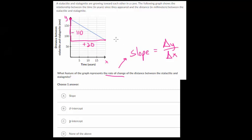So we can find roughly the slope of this line. But that's not what it's asking for. It's just asking which feature of the graph represents this rate of change. And that's the slope. The slope will tell us how quickly the distance between these stalactites and stalagmites are actually approaching each other. So A will answer this question. And let's do one more.